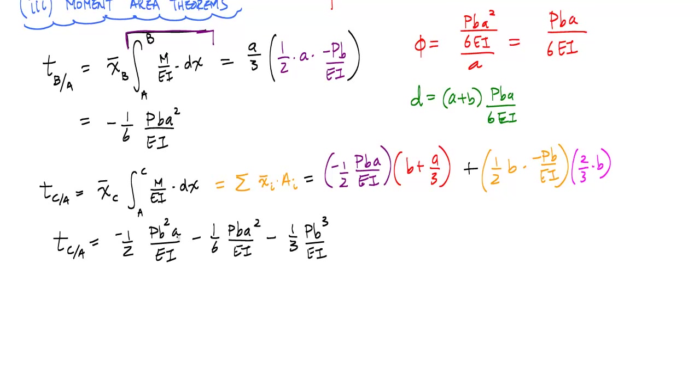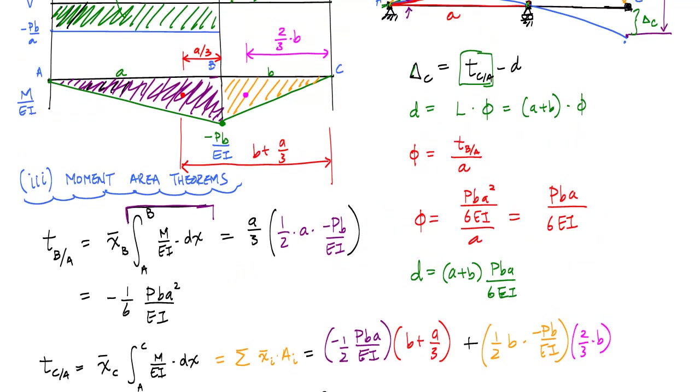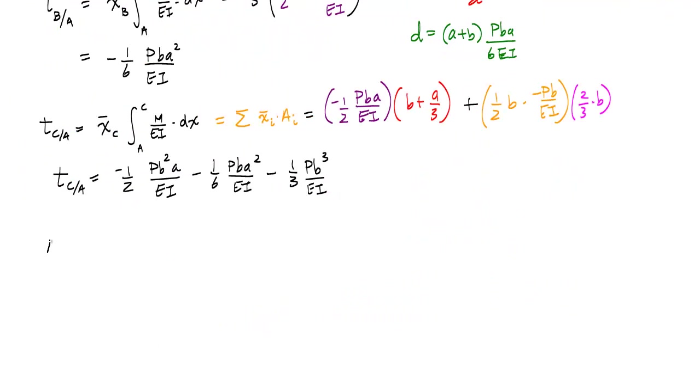I'll get this. This TCA is this negative one-half PB squared times A over EI minus one-sixth PBA squared over EI. And you'll see that if you look at this, all this has units of displacement in it because EI is a force times distance squared. And now I can calculate based on this last part. Now I can apply this last portion right here and calculate the magnitude of the deflection at point C. And again, I can remove the negatives because I'm only playing with magnitudes here. This delta C, this delta C, the magnitude is equal to TCA minus D.